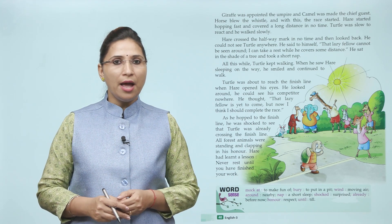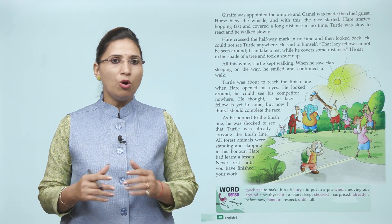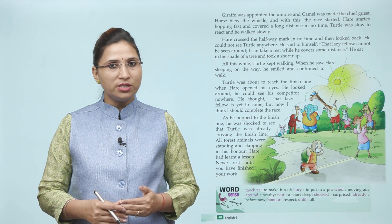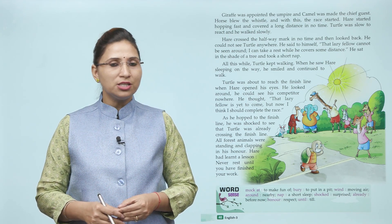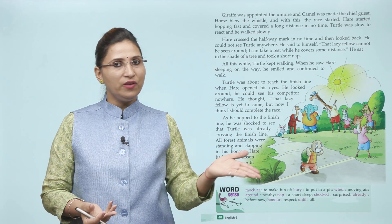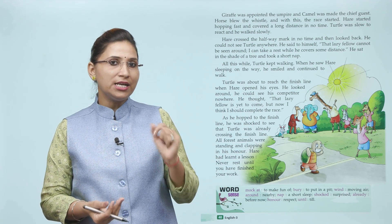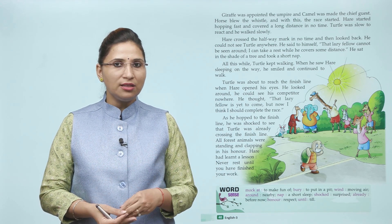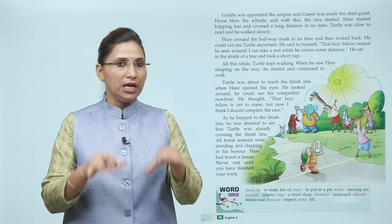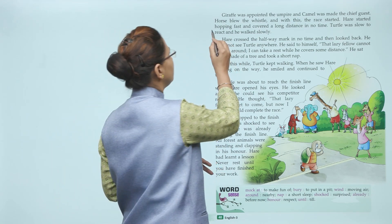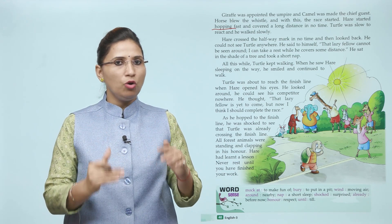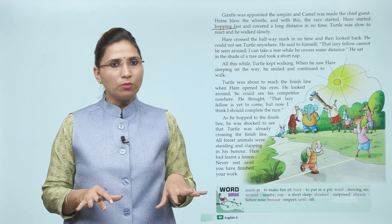Giraffe was appointed the umpire and camel was made the chief guest. Horse blew the whistle and with this the race started. Hare started hopping fast and covered a long distance in no time. Giraffe ko umpire banaya gaya, camel chief guest bana. Horse ne whistle ki aur race start ho gayi. Hare uchhal uchhal kar tezi se bhaagna start kar diya aur thode time mein hi long distance cover kar liya.